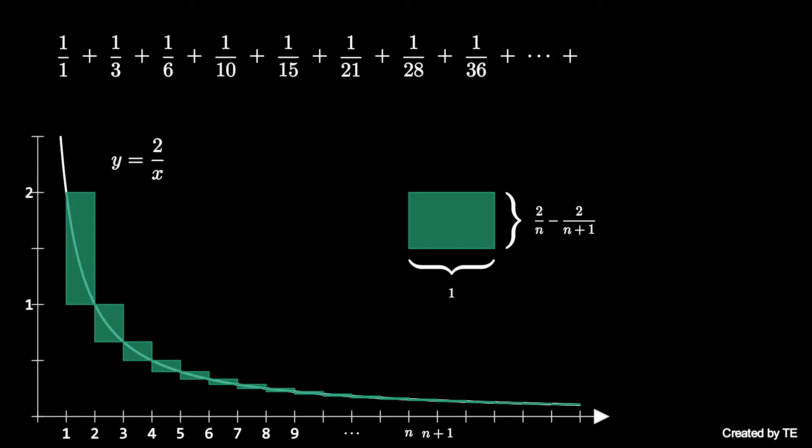Thus, the width is 1 and the length is 2 divided by n times n plus 1, which is just 1 over the binomial coefficient n plus 1 choose 2, or the n plus 1st triangular number.